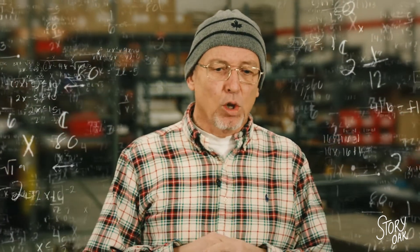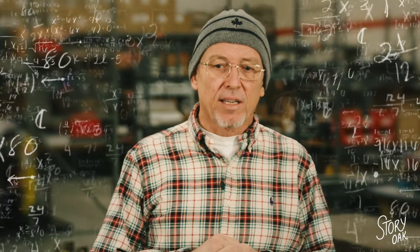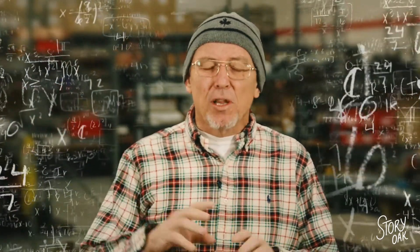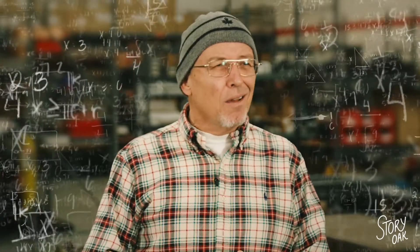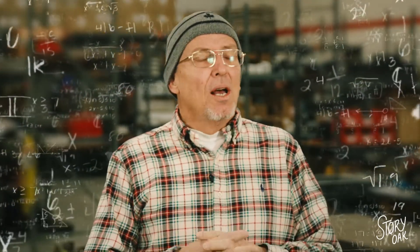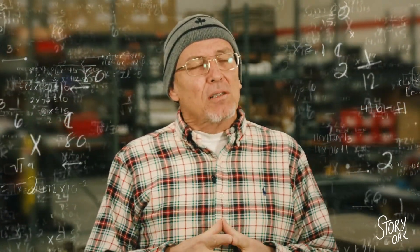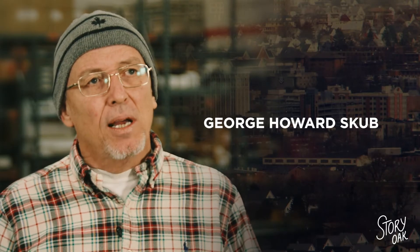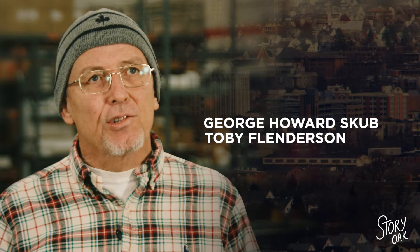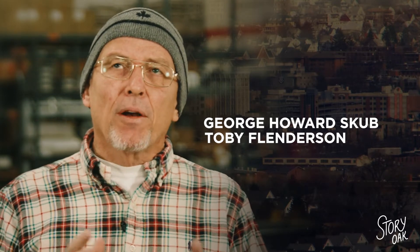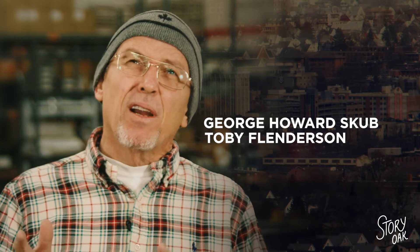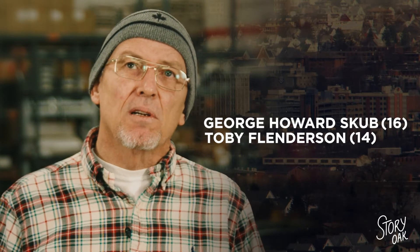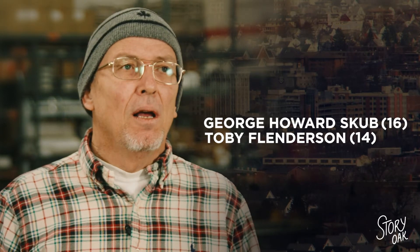Writers will typically leave clues in scripts and pictures in the background of scenes, so I thought maybe they did something math-wise. Looking at the two names — George Howard Scubb and Toby Flenderson — there's 16 letters in one and 14 letters in the other, so no correlation there.